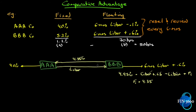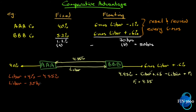Triple-B pays triple-A 4.35% fixed and receives LIBOR. Externally they pay LIBOR plus 0.6%, so the LIBORs cancel, leaving 60 basis points plus 4.35% for a total of 4.95%. On triple-A's side: they pay out LIBOR, plus their external 4% debt, minus the 4.35% they receive from the swap — giving LIBOR minus 35 basis points, compared to the LIBOR minus 10 basis points they could have gotten on their own.